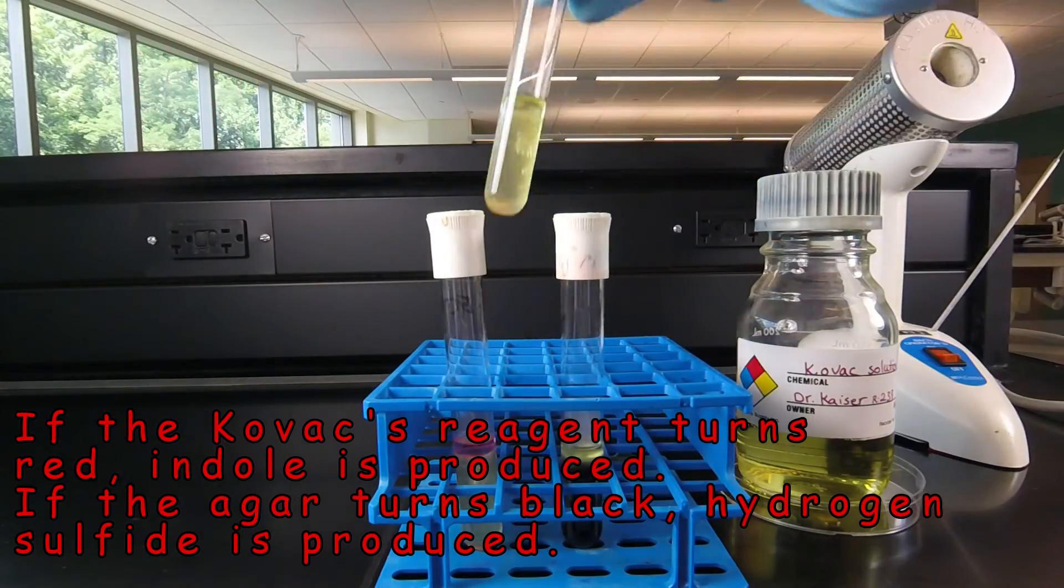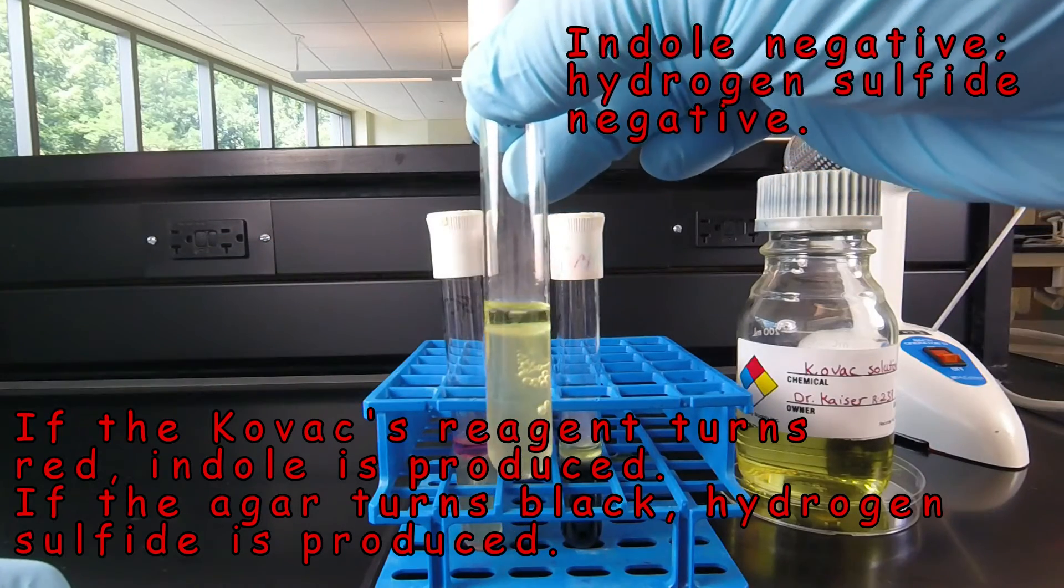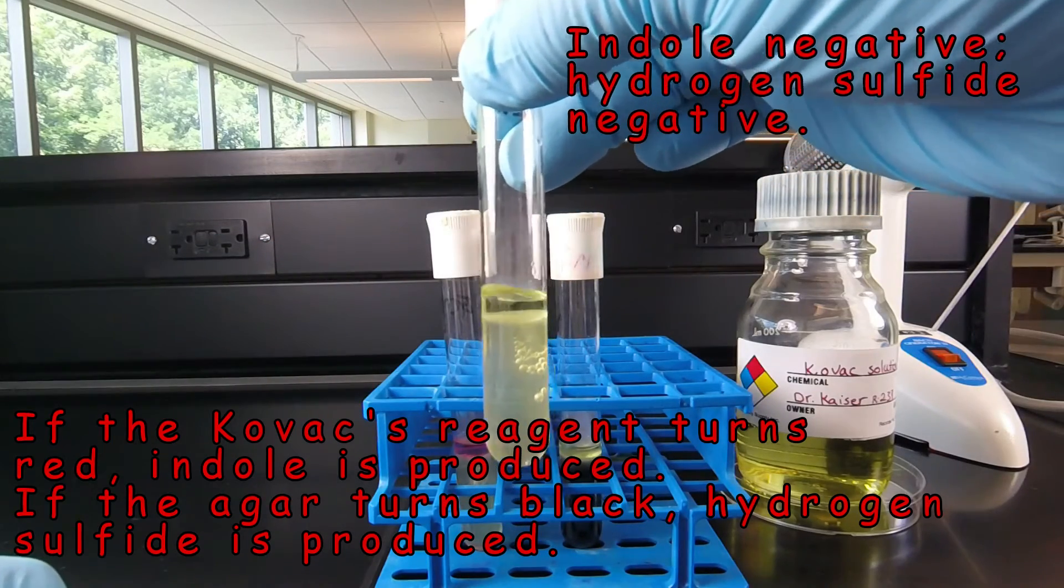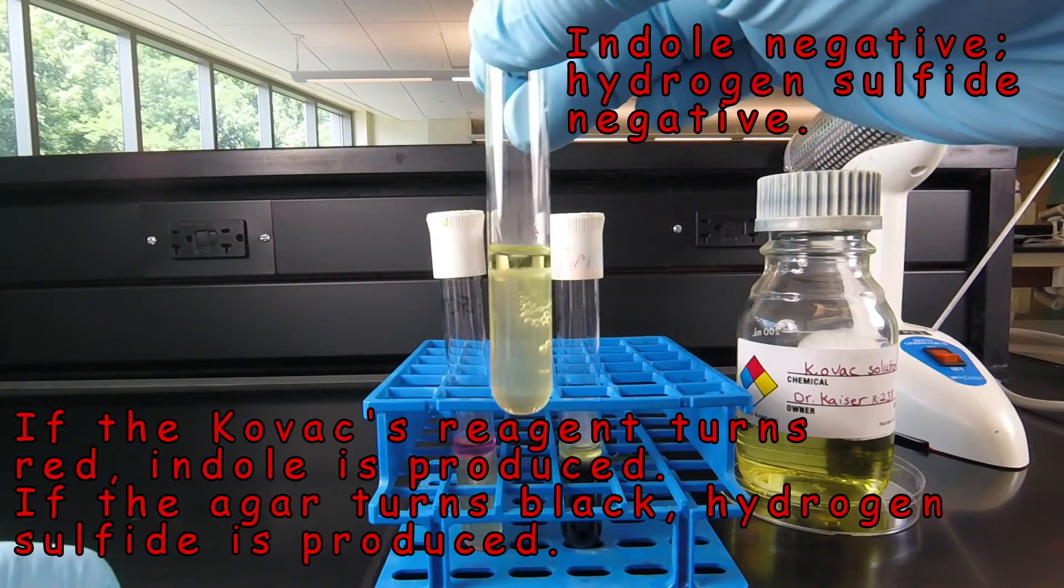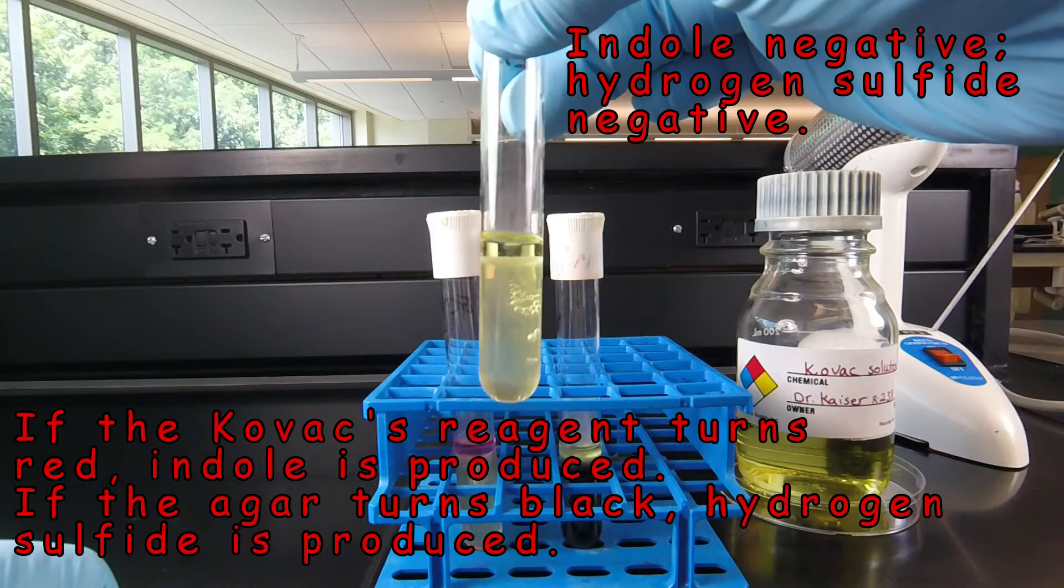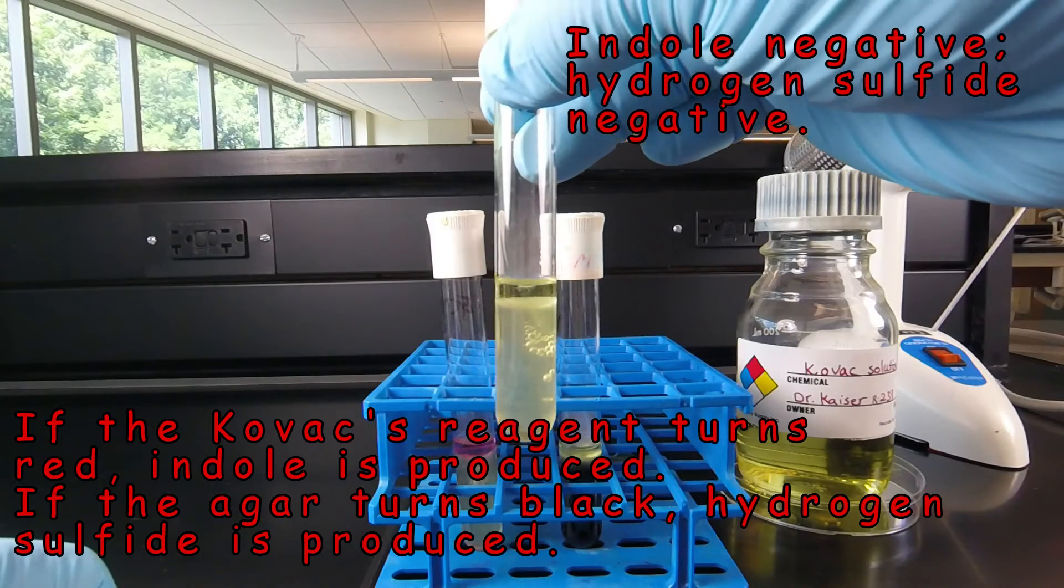And finally, this bacterium did not produce indole. The Kovac's reagent remains yellow. And it did not produce hydrogen sulfide as indicated by the fact that the agar didn't turn black. So this is indole negative, hydrogen sulfide negative.